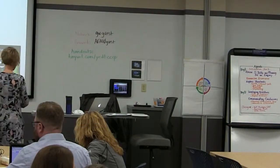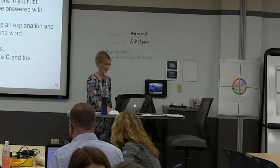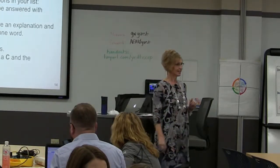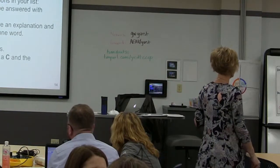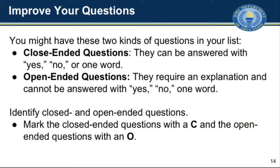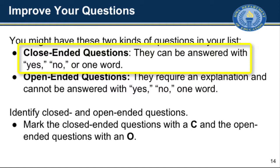The next step in the QFT process is to look at different types of questions that you might have generated. In the QFT process, they call them open and closed. The closed ones might be answered with a yes or no or just one word, whereas the open-ended ones require more of an explanation and cannot necessarily be answered in just one way.